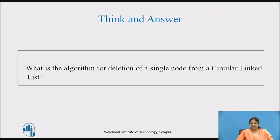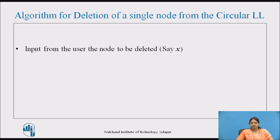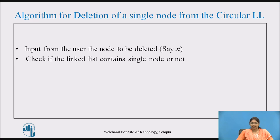Try to think: what is the algorithm for deletion of a single node from a circular linked list? Pause the video and note down the answer. Algorithm: Input from the user the node to be deleted, say x. Check if the linked list contains a single node. If yes, assign null to the list pointer.